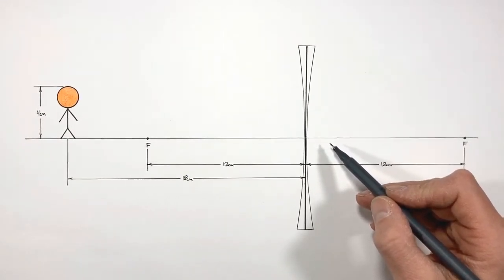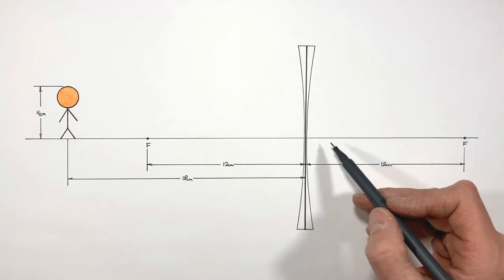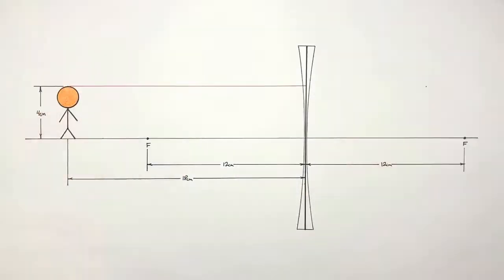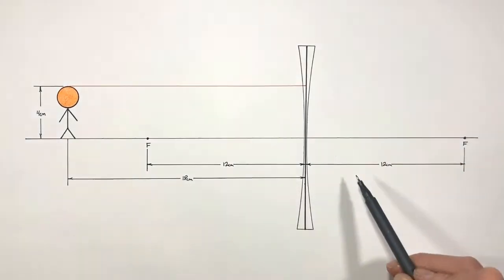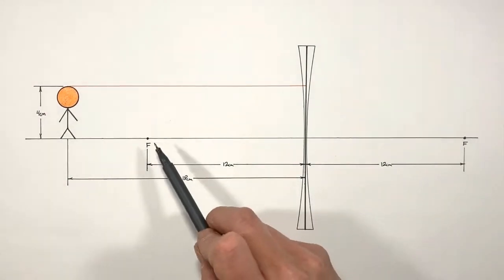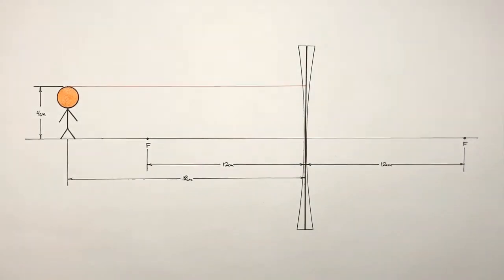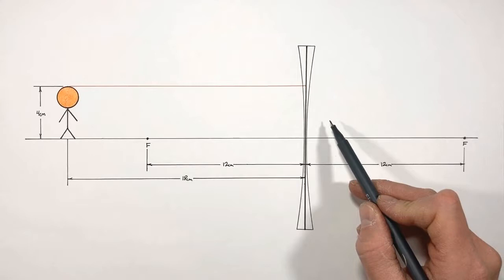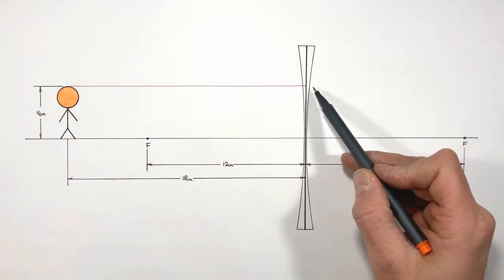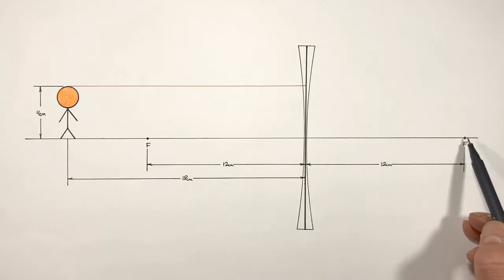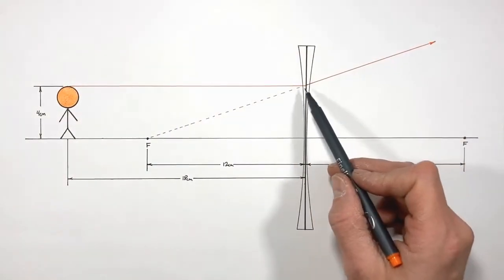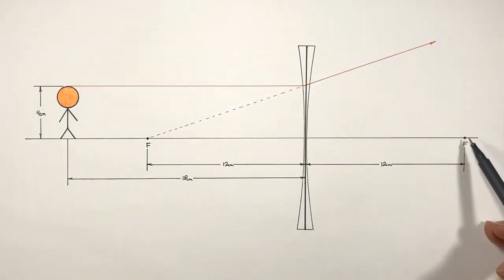We start the ray tracing diagram with the principal ray, which travels from the top of our object toward the lens parallel to the principal axis. As this ray strikes the lens it's going to refract, but the catch is that we're dealing with a concave lens rather than a convex lens. When a principal ray travels through a convex lens it's refracted through the focal point, but through a concave lens it's actually refracted away from the focal point.